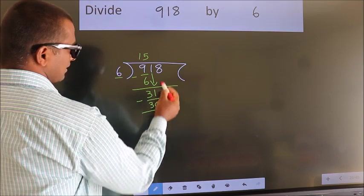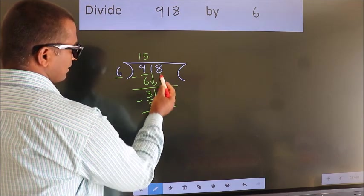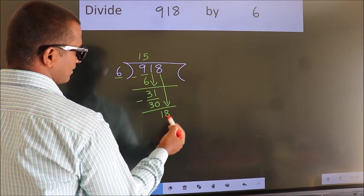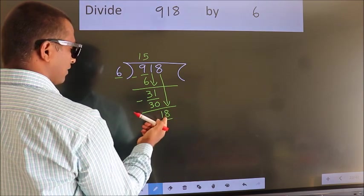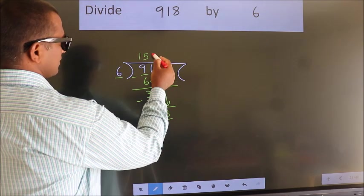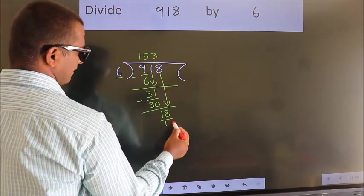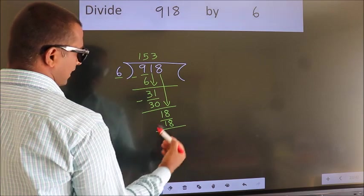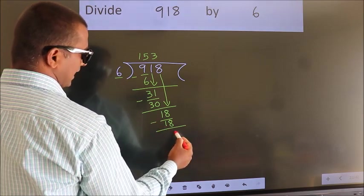After this, bring down the beside number. So 8 down. So 18. When do we get 18? In 6 table, 6 3s 18. Now we subtract. We get 0.